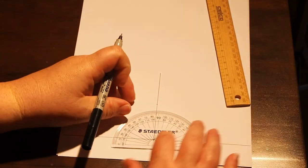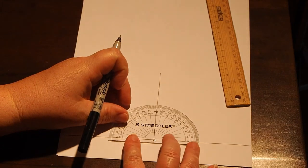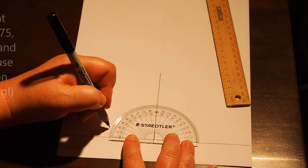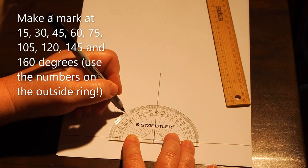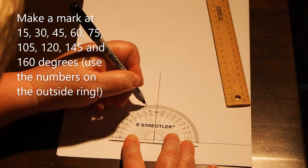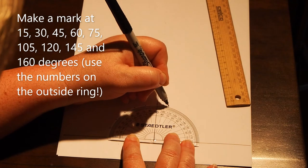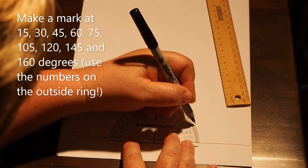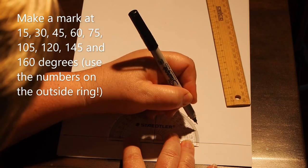Place the protractor crosshairs back on the apex. Be careful to line it up accurately. Measure and make a dot every 15 degrees at 15, 30, 45, 60, 75, 105, 120, 135, 145, and 160 degrees.